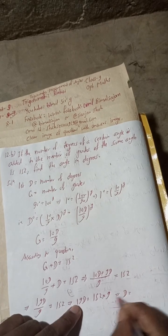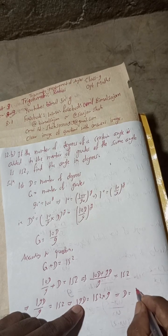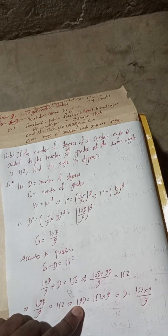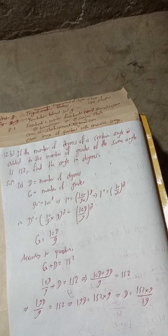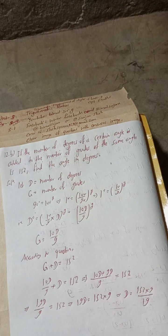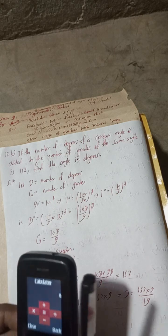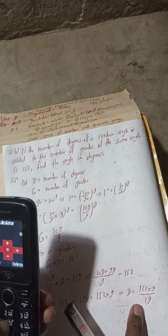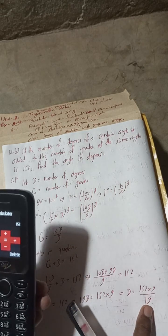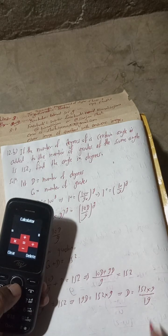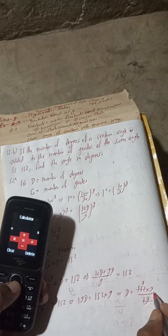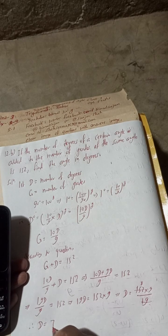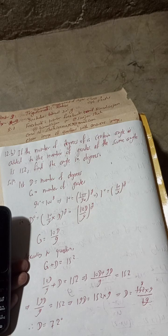This implies 19D equals 152 times 9. This implies D equals 152 times 9 divided by 19. Now when you cancel this, 152 divided by 19 is 8. So 8 times 9 equals 72. Therefore D equals 72 degrees.